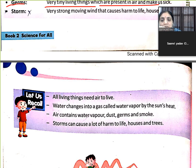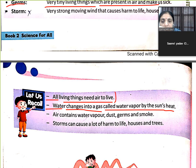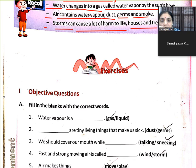Now, what we have learned in this chapter. Number one: all living things need air to live. Number two: water changes into a gas called water vapour by the sun's heat. Number three: air contains water vapour, dust, germs, and smoke. Number four: storm can cause a lot of harm to life, houses, and trees.